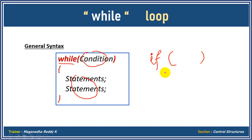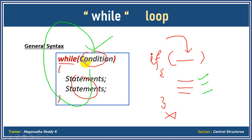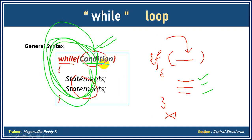When you have an 'if' condition with some condition and some statements inside, if the condition is satisfied, the statements will get executed, and that's it — it'll stop there. It will not come back again in the case of an 'if' condition. Whereas in a while loop, if the condition is satisfied, it'll execute the statements, then come back again, check the condition, and keep executing as long as the condition is satisfied. That's how a while loop works.